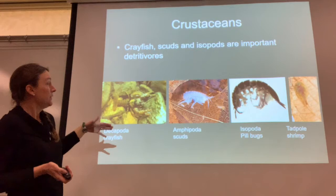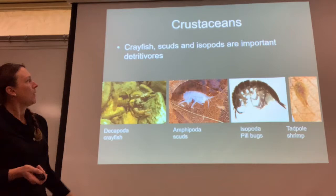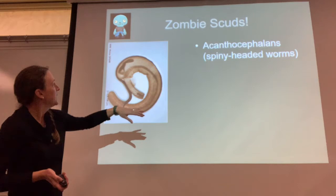Then we have crustaceans — they're also arthropods. They have jointed legs and things like crayfish, amphipods, isopods, and tadpole shrimp. A lot of them are important detritivores, so they eat detritus.